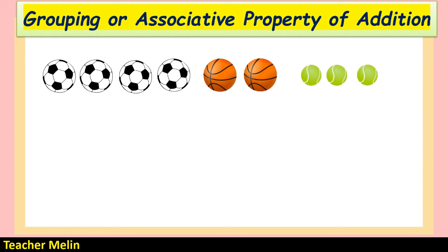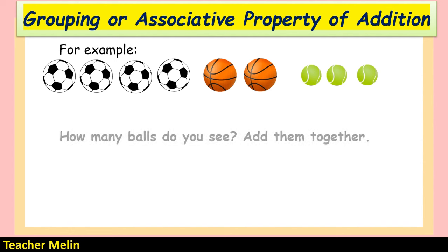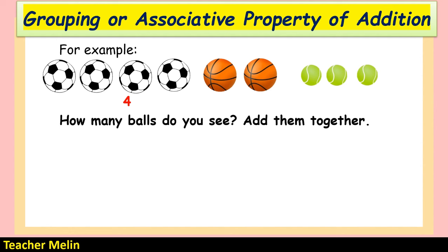Let's proceed to the third property: the grouping or associative property of addition. Look at the picture. There are 4 balls, another 2 balls, and another 3 balls. How many balls do you see in all? Add them together.